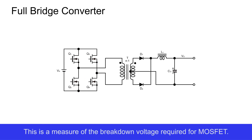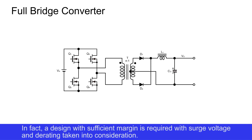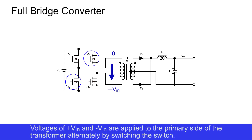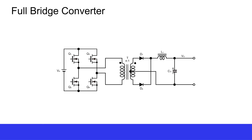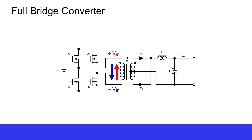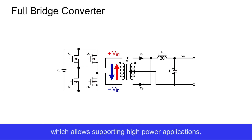This is a measure of the breakdown voltage required for MOSFETs. A design with sufficient margin is required with surge voltage and D rating taken into consideration. Voltages of plus VIN and minus VIN are applied to the primary side of the transformer alternately by switching. This enables an effect equivalent to applying the power supply voltage twice, which allows supporting high power applications.